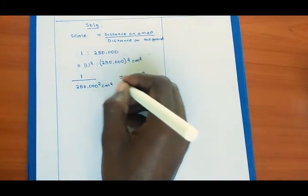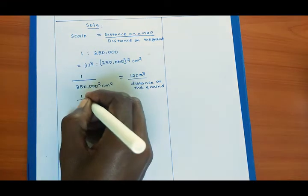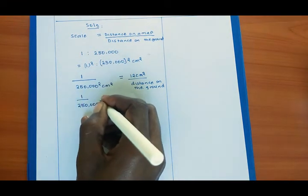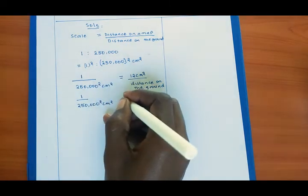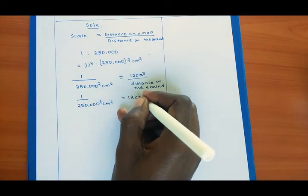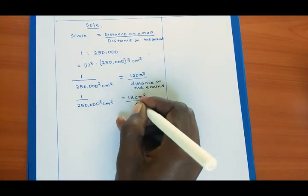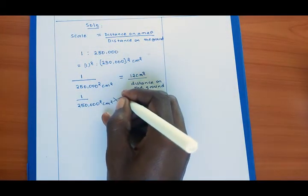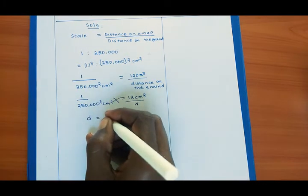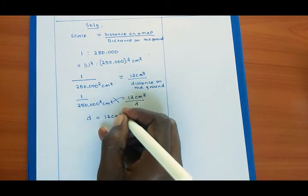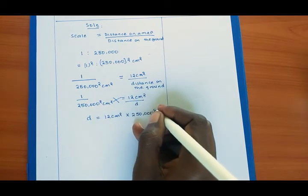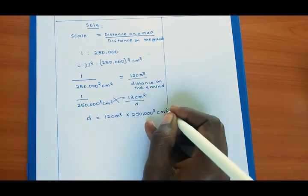So you can cross multiply. 1 out of 250,000 squared which is centimeters squared will give us 12 centimeters squared out of D. Let the distance on the ground be D. Then we cross multiply. D will give us 12 centimeters squared times 250,000 squared, also in centimeters squared.